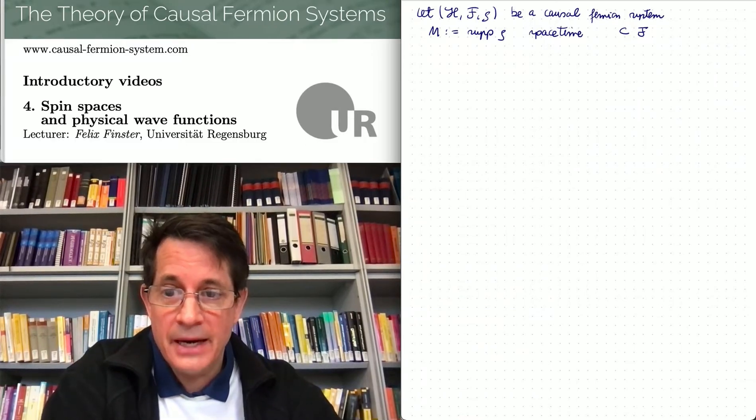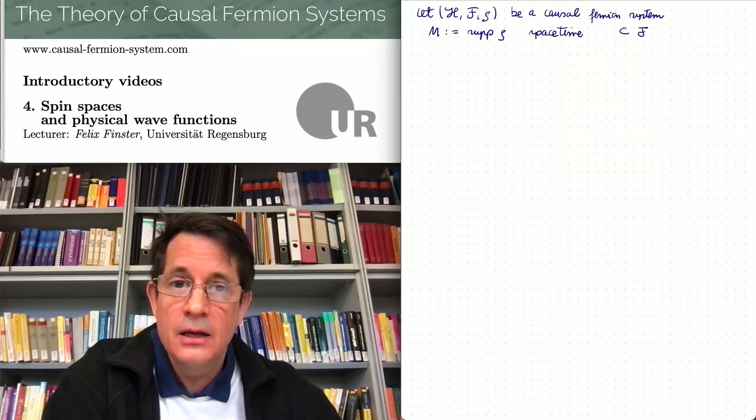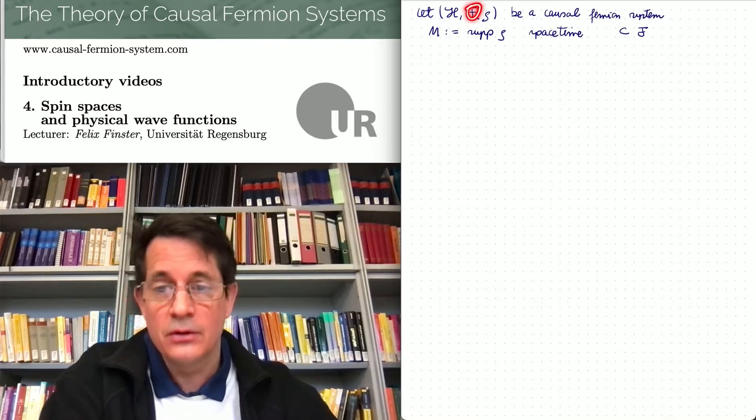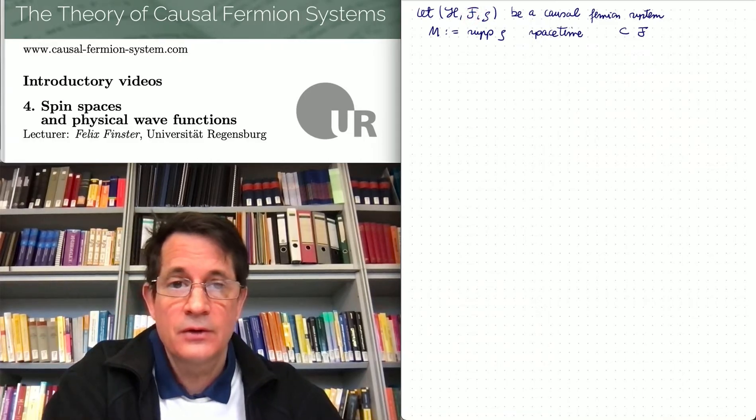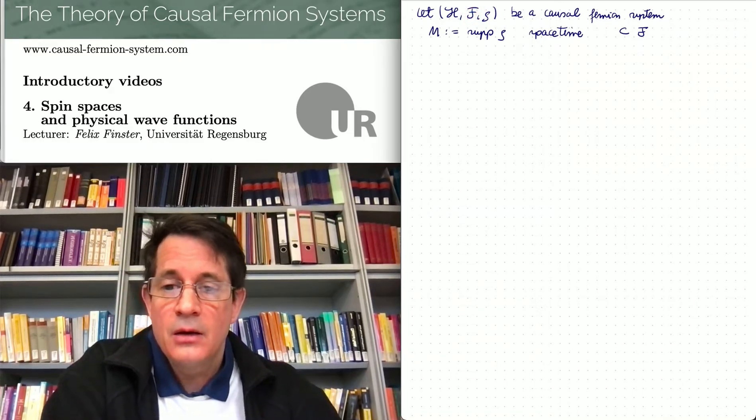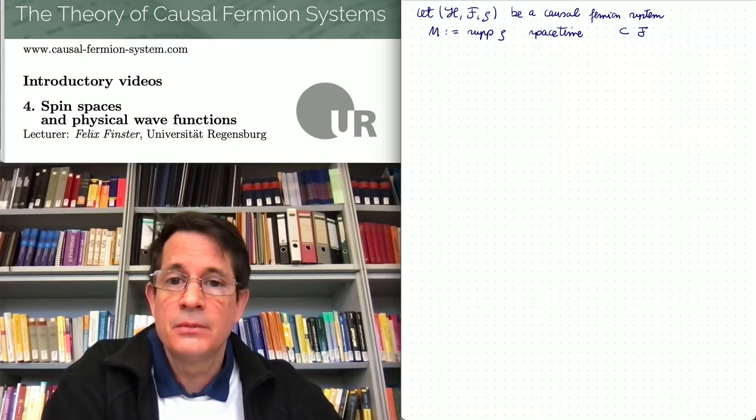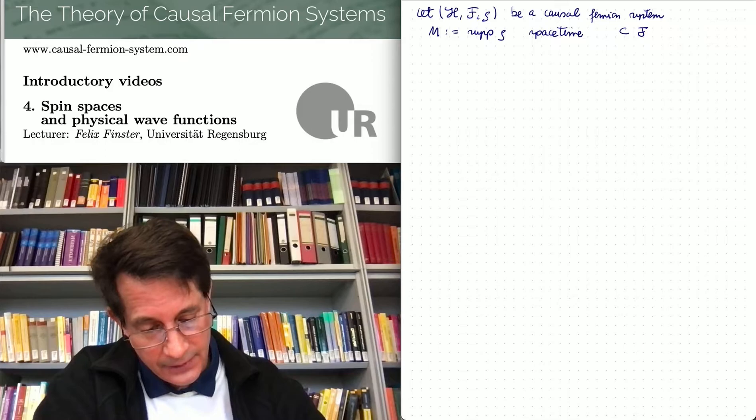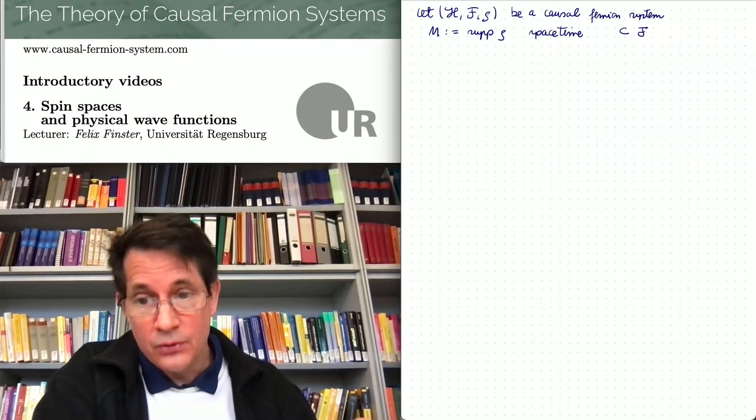Therefore space-time is a subset of curly F. It's a set of operators with a topology inherited from curly F, so it's a topological space. The space-time points are linear operators in curly F, symmetric operators of rank at most 2n which have at most n positive and at most n negative eigenvalues.